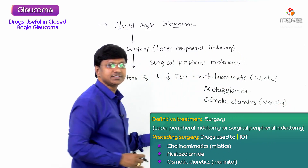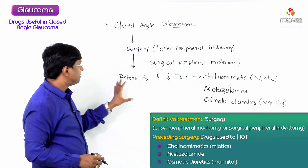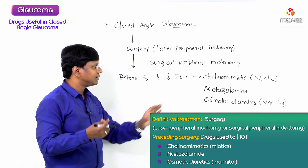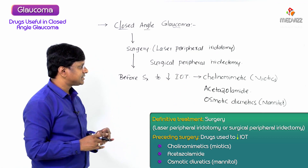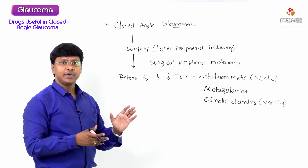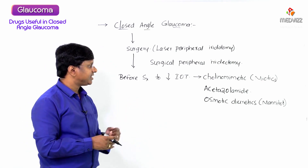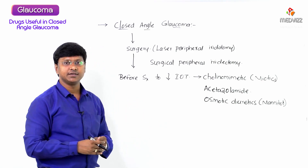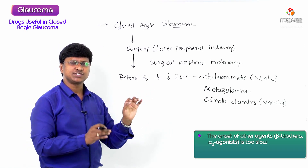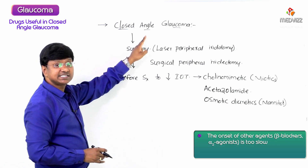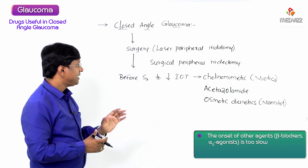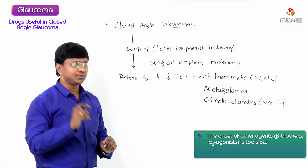Before surgery, to reduce intraocular tension, we use cholinomimetics, acetazolamide, or osmotic diuretics such as mannitol. Whereas with other agents like beta blockers or alpha-2 agonists, the onset of action is too slow in this situation — that is the reason why they are not used.